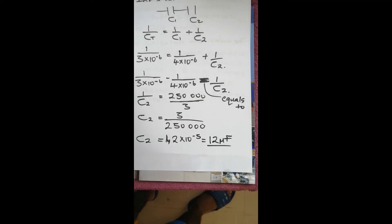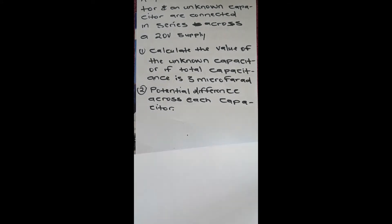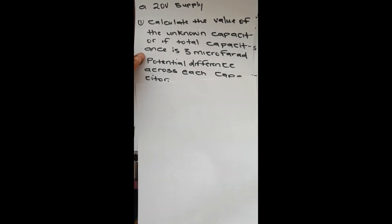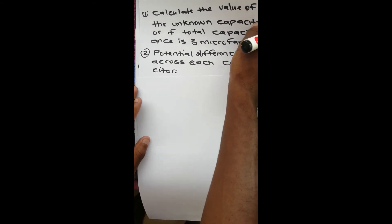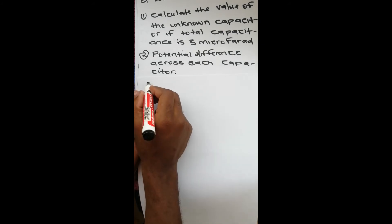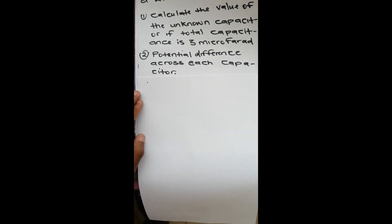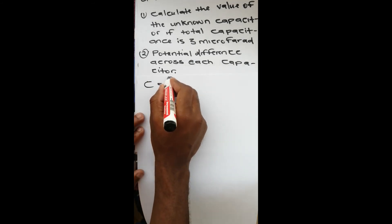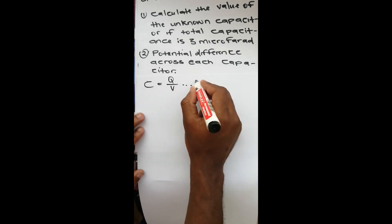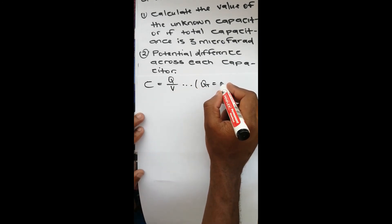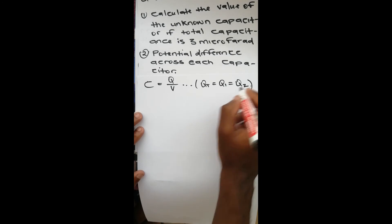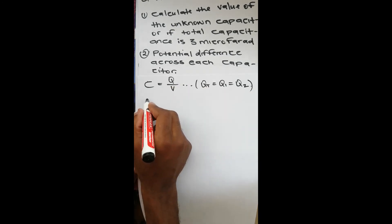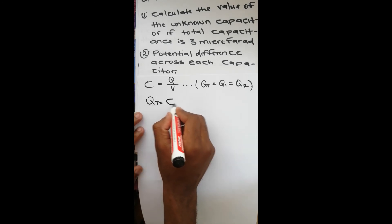For the second question, calculate the potential difference. We know the relationship between capacitance, voltage, and charge, which is C equals Q over V. We also know that QT equals Q1 equals Q2.